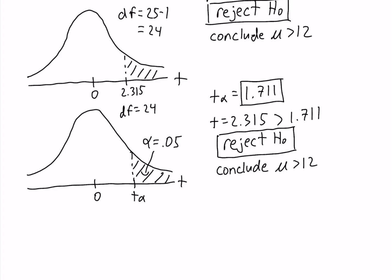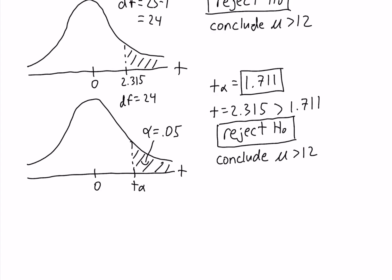We get the same conclusion whether we use the p-value approach or the critical value approach. Another way of looking at the critical value approach rejection rule is that we reject the null hypothesis if our test statistic is in the rejection region, and we do not reject the null if the test statistic is in the non-rejection region.